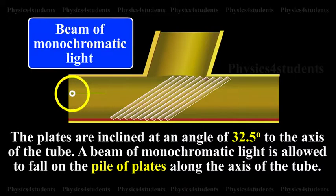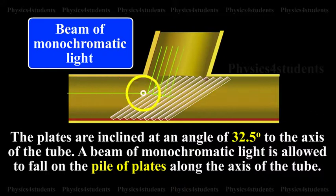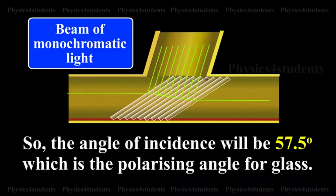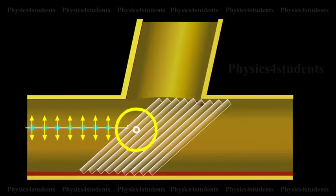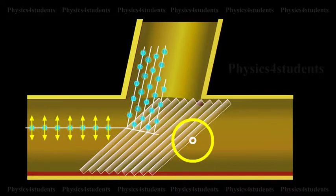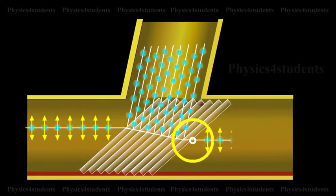A beam of monochromatic light is allowed to fall on the pile of plates along the axis of the tube. So, the angle of incidence will be 57.5 degrees which is the polarizing angle for glass. The vibrations perpendicular to the plane of incidence are reflected at each surface and those parallel to it are transmitted.